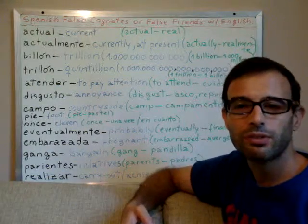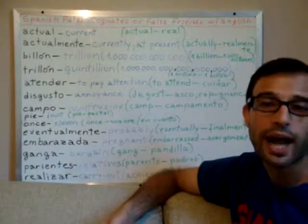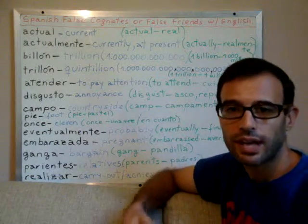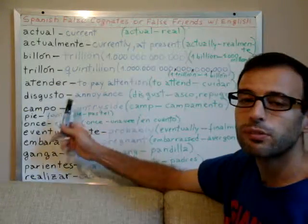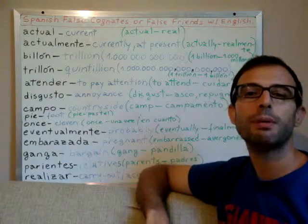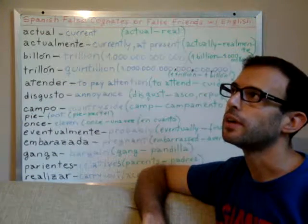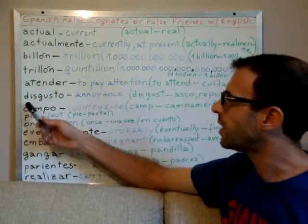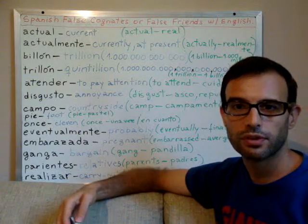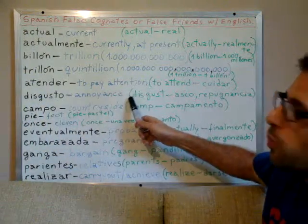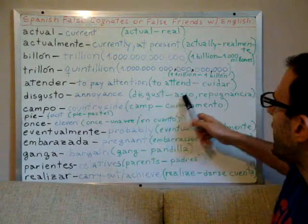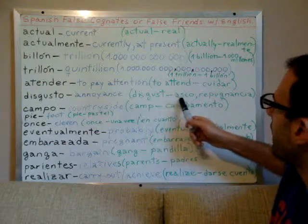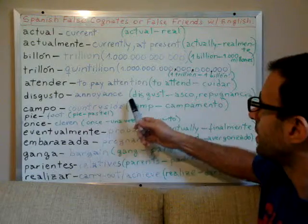For example, if you have received very bad news, you are 'disgustado' or you have 'disgusto' because you received something negative. So 'disgusto' is annoyance — usually in the emotional sense, like when you receive bad news. The word for 'disgust' in Spanish would be 'asco' or 'repugnancia.' 'Asco' and 'repugnancia' both mean disgust.